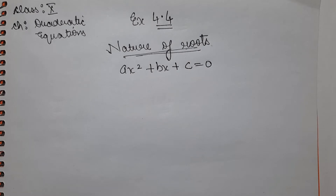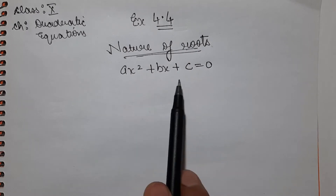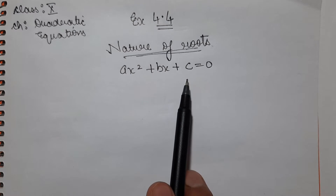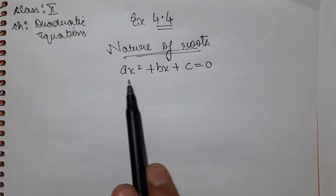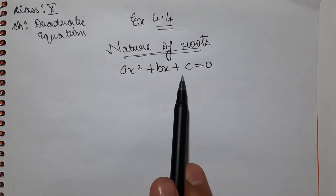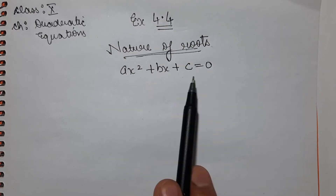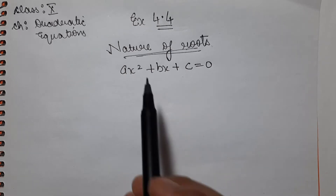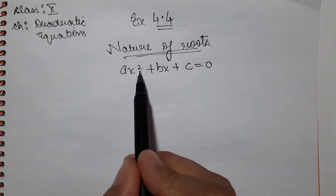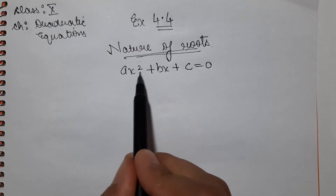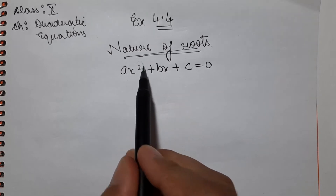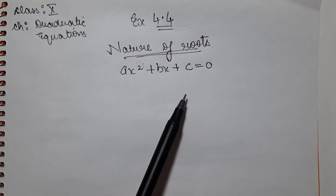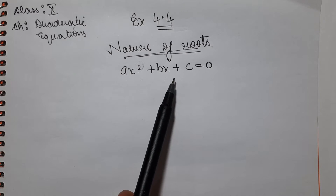Before we discuss about the nature of roots, there are roots of quadratic equations. We know that the quadratic equation ax² plus bx plus c is equal to 0 is the general form. The degree of this equation is 2, which means there are 2 roots of this equation.